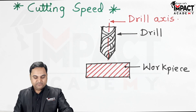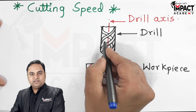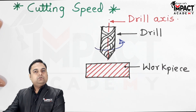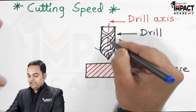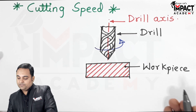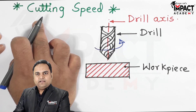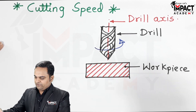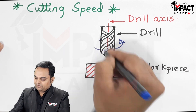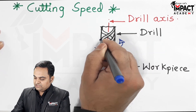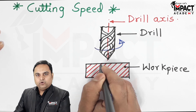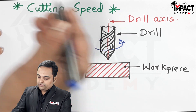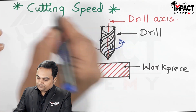When we are talking about cutting speed, this drill is a rotating tool — a rotating multipoint cutting tool — having multiple cutting edges as we can see here. When we talk about cutting speed, it means basically the linear velocity of the drill. If we take any single point on the periphery of this drill, what is the linear velocity of this point when it passes into the workpiece? That is basically called the cutting speed.